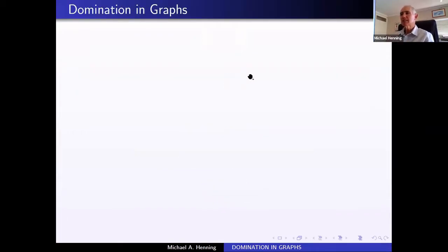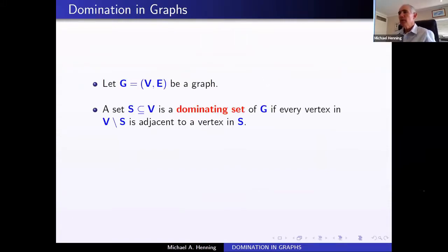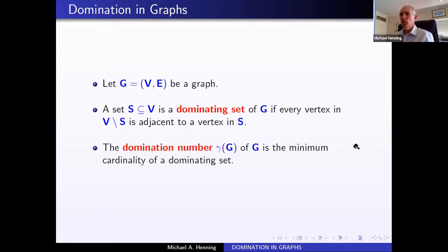We have a graph with vertex set V and edge set E. We're interested in a subset of vertices so that everybody has a neighbor in the set — in other words, everybody not in the set must be joined by an edge to somebody in the set. That's a dominating set. We normally look at the minimum cardinality of such a set, which we call the domination number, gamma(G): the minimum number of vertices so that everybody outside the set is adjacent to someone in the set.